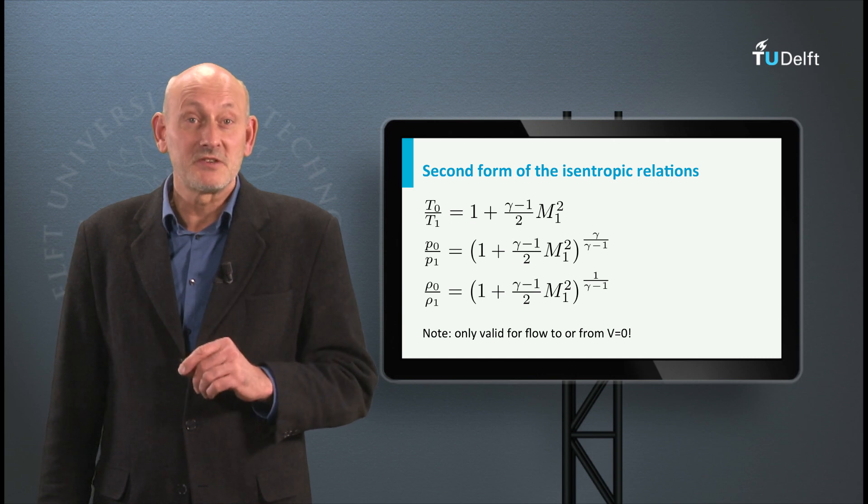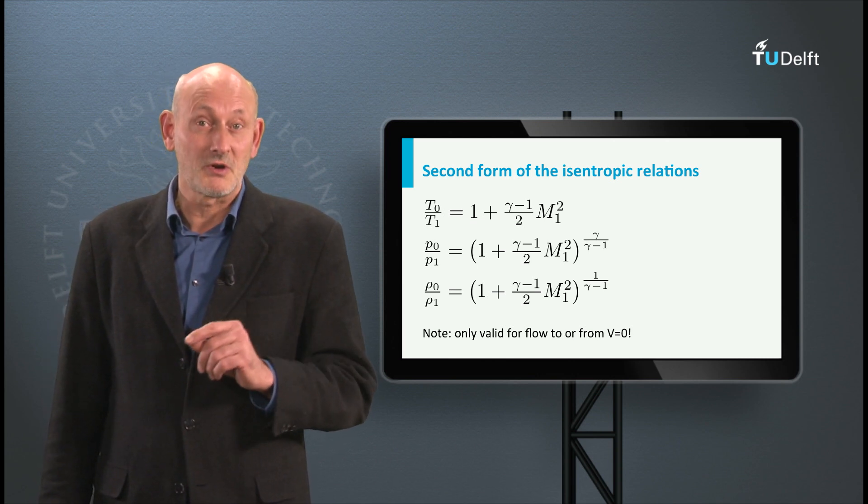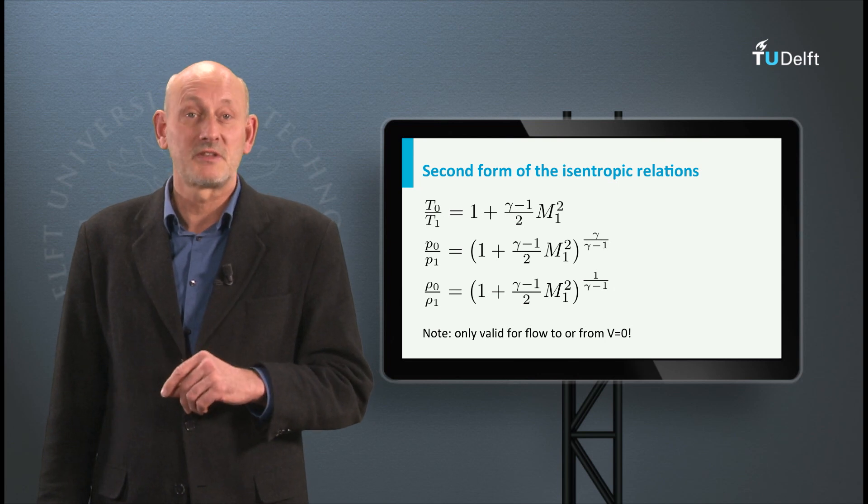Mind you, these expressions are only valid when the velocity is 0 in station 0, since that was the assumption at the start of the derivation.